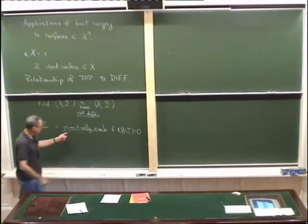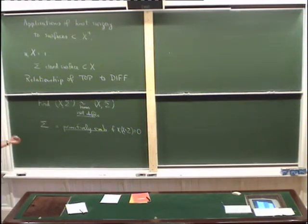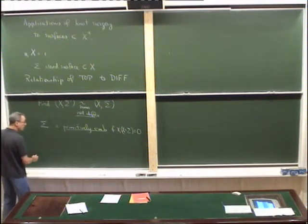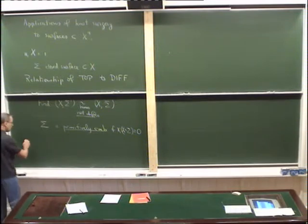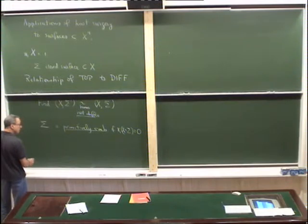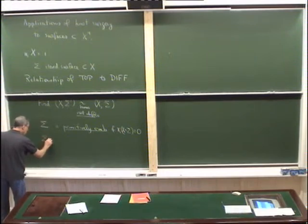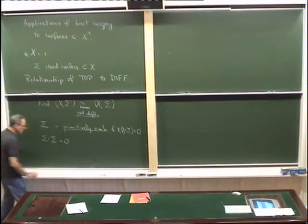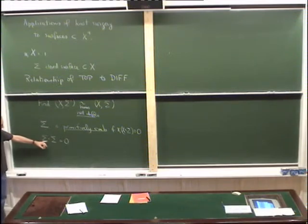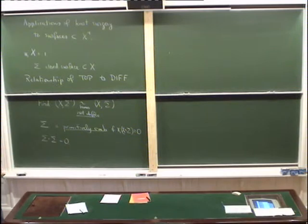In particular, by duality that implies that its homology class is a primitive class in H2. Let's suppose also, just for simplicity, that sigma has square zero. You can take it as an exercise to run through this whole construction in the case that sigma has positive self-intersection — by blowing up, you can bring its self-intersection back down to zero and the argument will still work after blowing up.